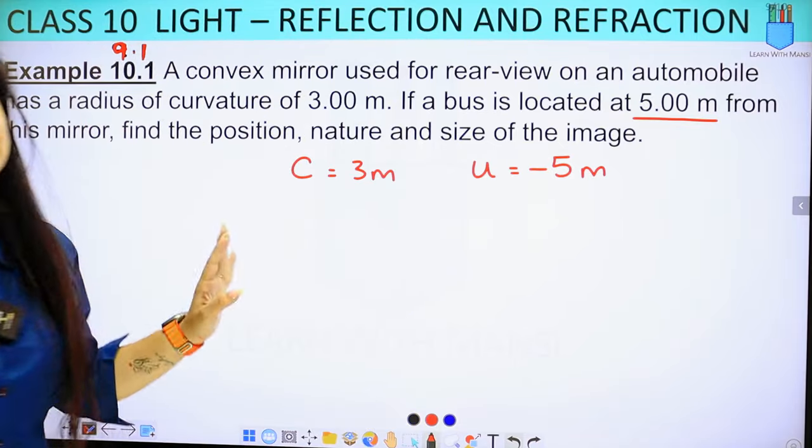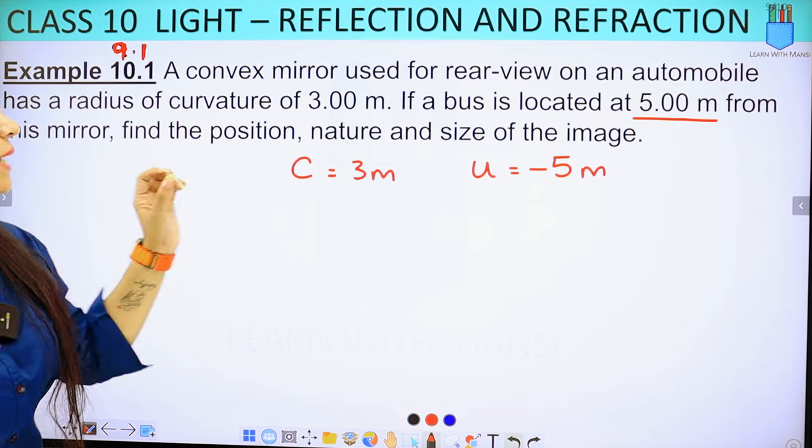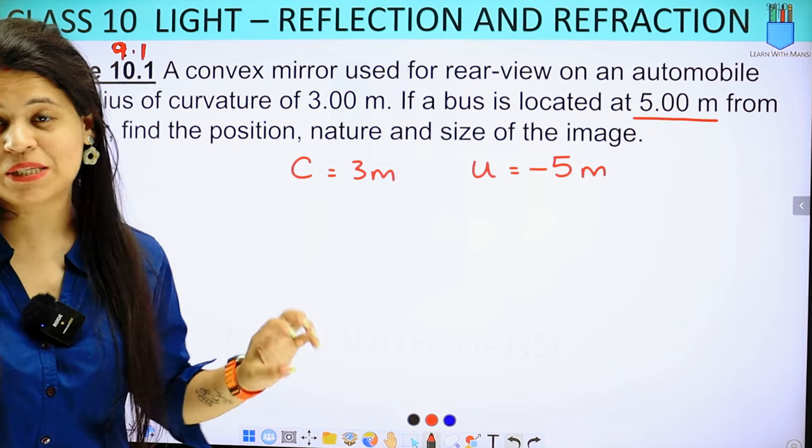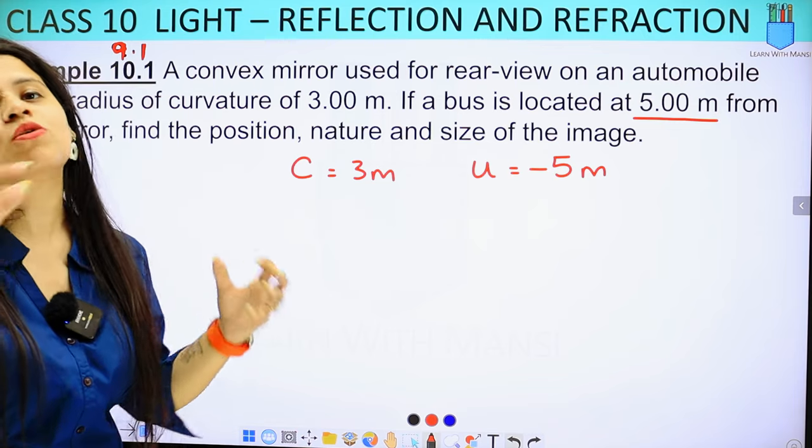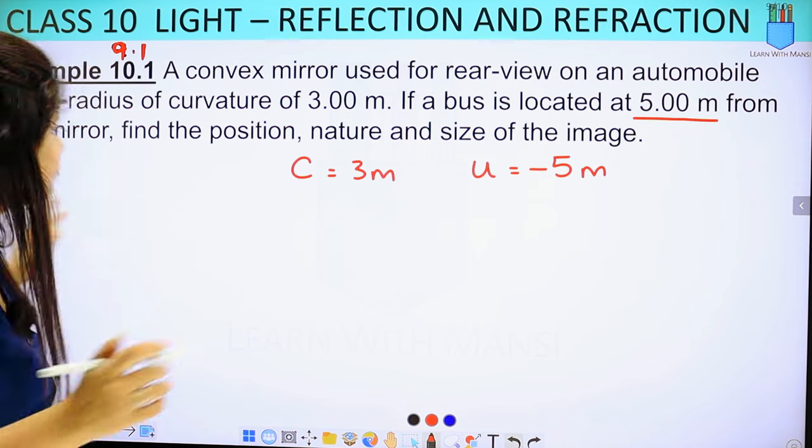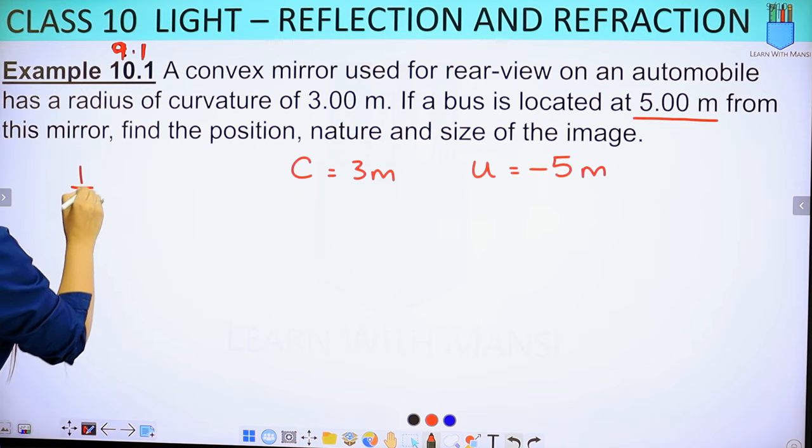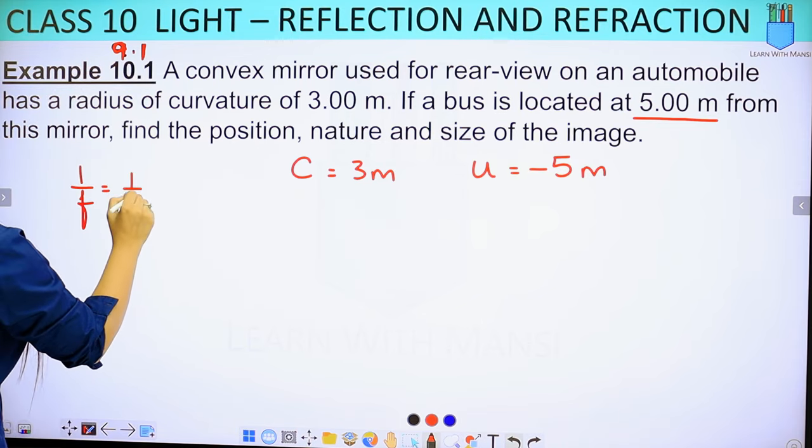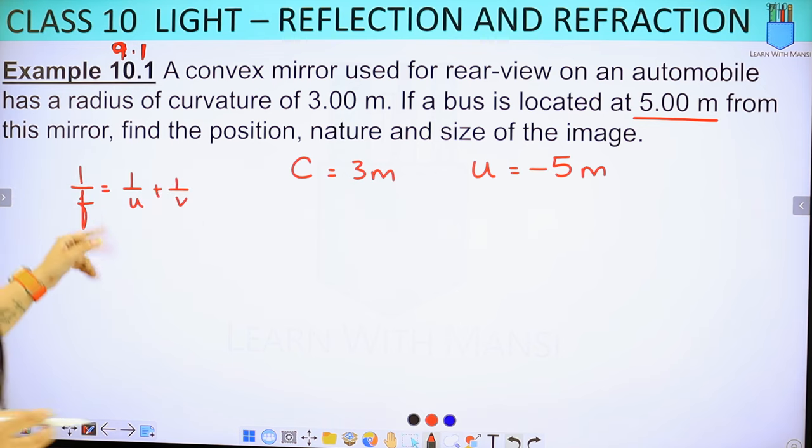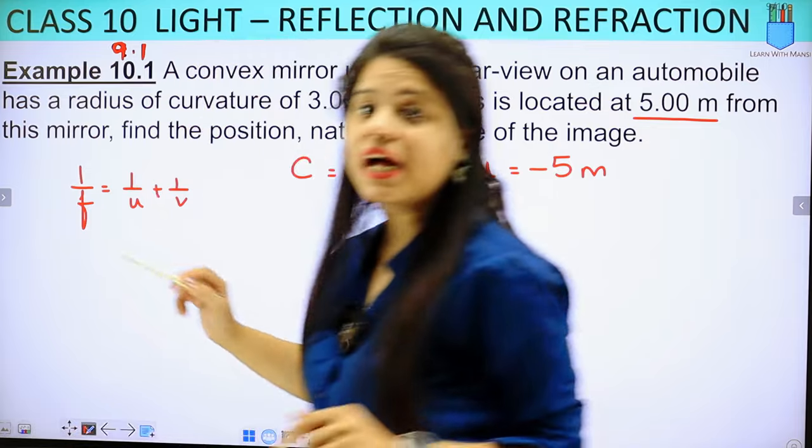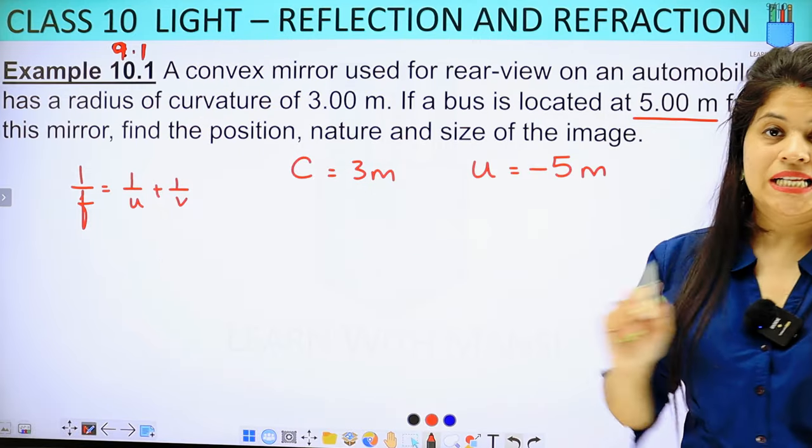Now, to find the position, nature, and size, we need to find magnification and V. The mirror formula we studied is 1 upon F equals 1 upon U plus 1 upon V. In this case, we have U, not V, not F. But C is given. We can find F from C.